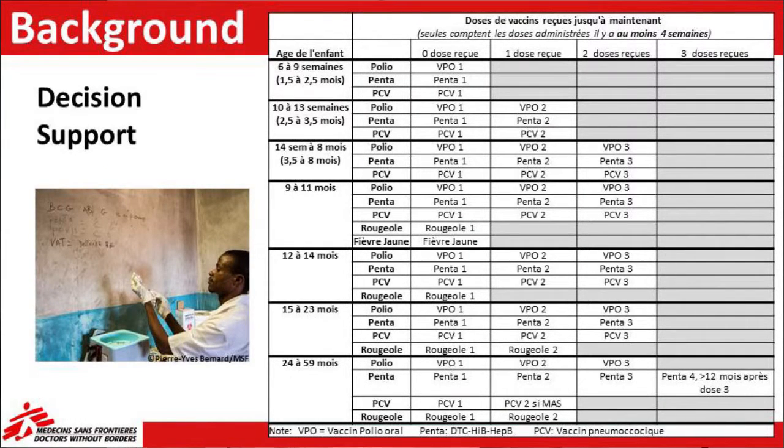Before the application, the field teams were using a paper search table to prescribe vaccines. It's quite a good table, but the field teams found it a bit complicated to use, and some mistakes were observed during the first round of the vaccination campaign. Also, this table is a simplified version of the complete recommendations, meaning there were some missed opportunities and over-prescriptions when using only this table.